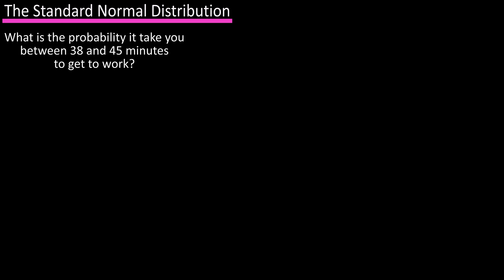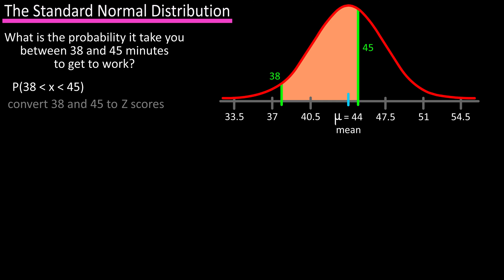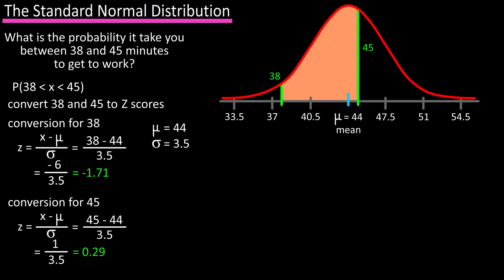What is the probability that it takes you between 38 and 45 minutes to get to work? On the normal distribution graph, we're looking for this area here, so we have probability of 38 less than x less than 45. First, we need to convert 38 and 45 to z-scores. Using our formula, we have 38 minus 44, the mean, divided by 3.5, the standard deviation, which equals negative 1.71, and 45 minus 44 divided by 3.5 equals 0.29.